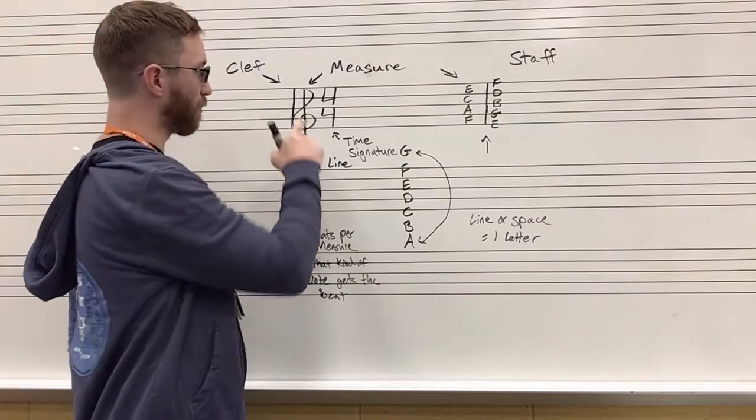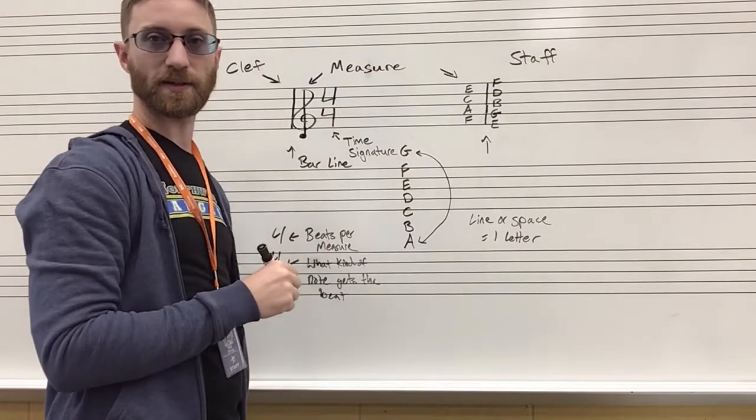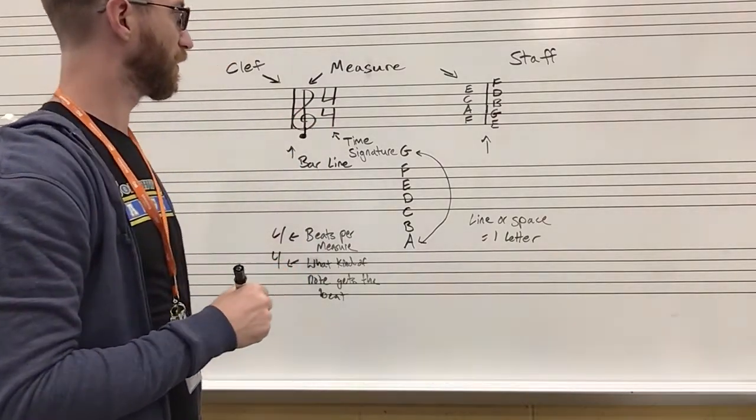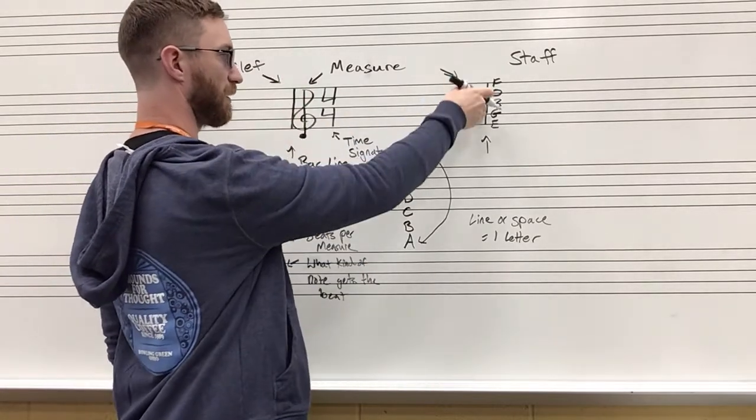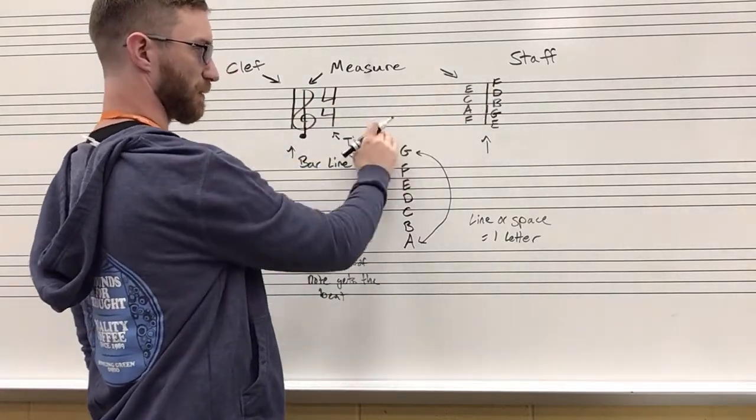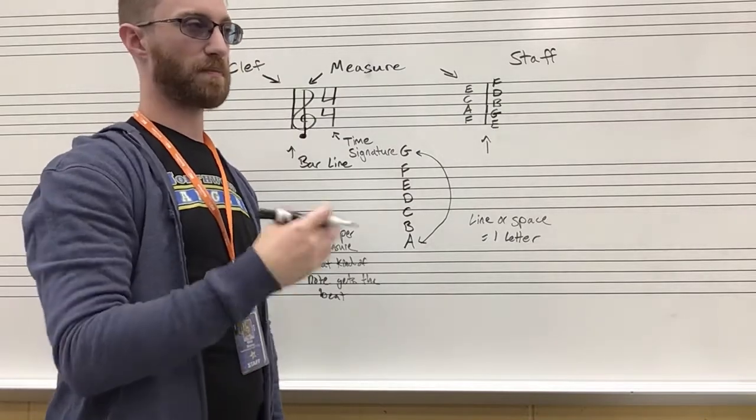There eventually will be one more thing in between called a key signature, but we're not going to worry about that quite yet. We have a bar line here and here which creates a measure. Pieces can have many measures, we can have hundreds of measures even.